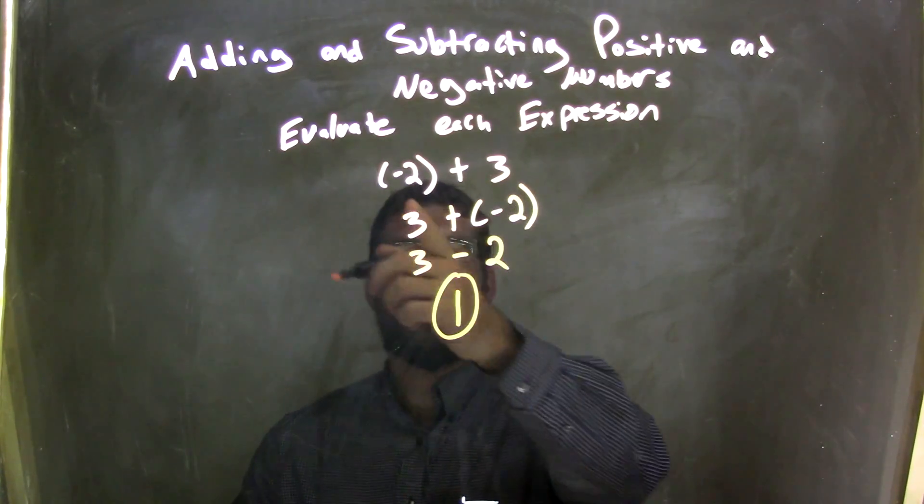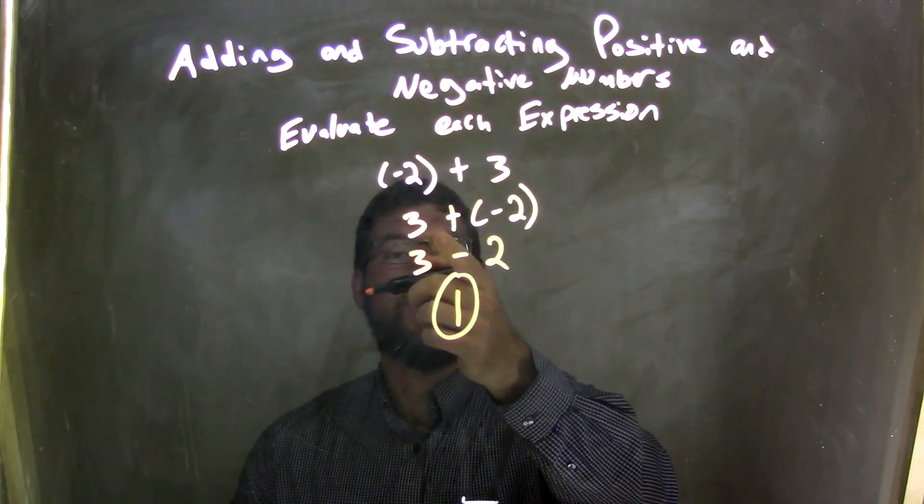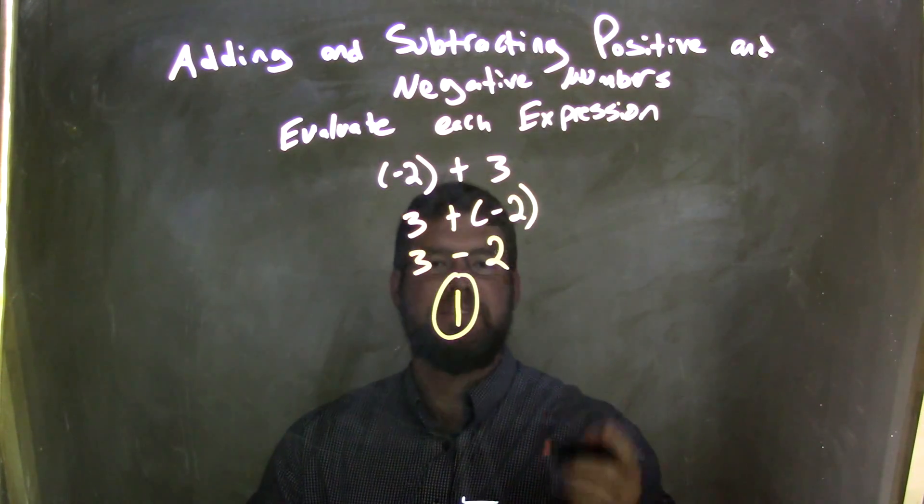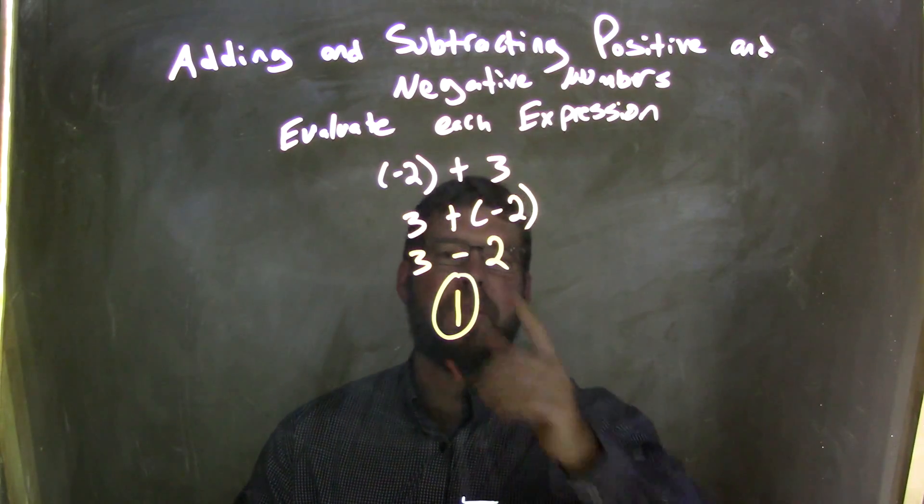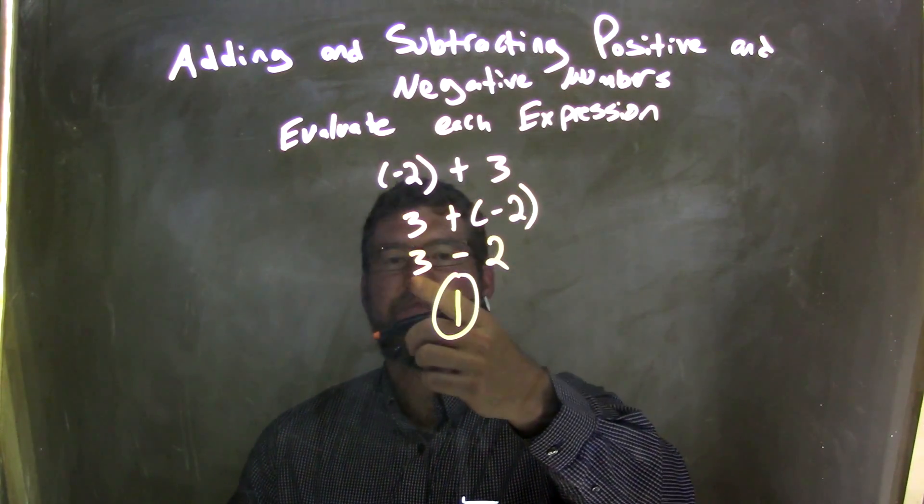So let's recap. We started with negative 2 plus 3 and used the commutative property to flip those, so we rearranged it to 3 plus negative 2. It's exactly the same. From there, we know that adding a negative is the same thing as subtraction, so 3 minus 2.